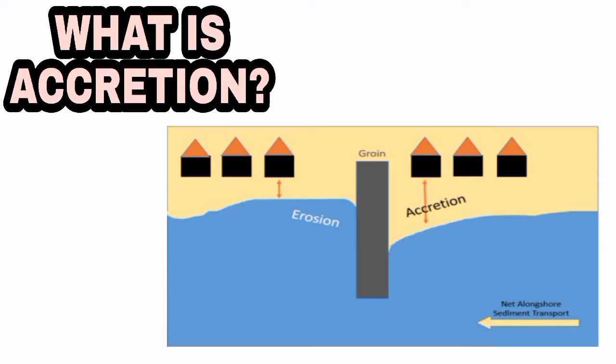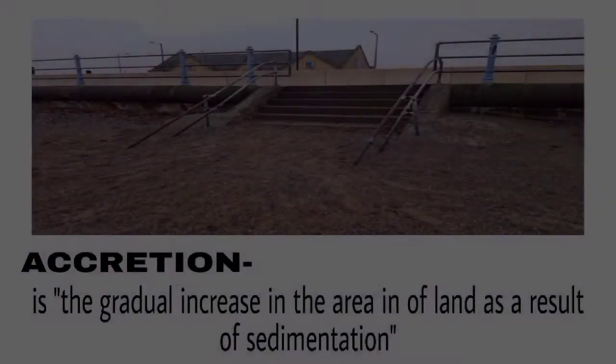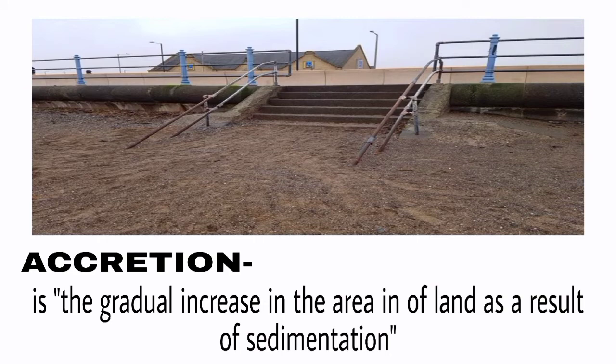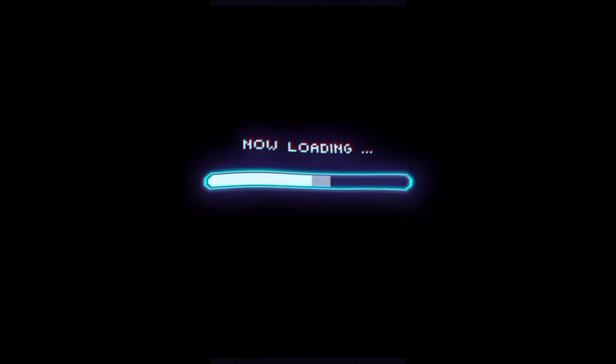The second major process is accretion. Accretion is the gradual increase in the area of land as a result of sedimentation. Here is a video showing the difference between erosion and accretion.